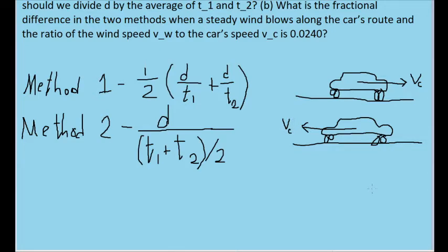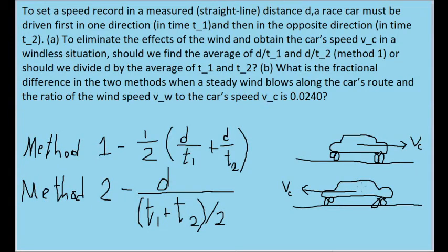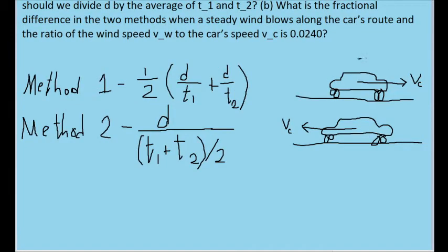Let's assume that in both cases, the wind is constant and points in the same direction. This means that in one case, the speed of the wind is pointing along with the speed of the car in the same direction, and in the other case, it is pointing in the opposite direction, fighting back against the car's speed.